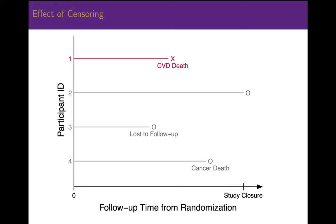Participant 3, for example, was lost to follow-up, so we know they lived at least that long without dying due to CVD, but we don't know how much longer they lived or what they eventually died of. If we count participant 3 as dying of CVD at the time they were lost to follow-up, our estimate of the survival time will almost certainly be too short, possibly by a lot. One very common correct way to deal with censored observations is to calculate survival using the Kaplan-Meier method. This method uses all of the data available at a given time, including participants who eventually will be censored, to estimate the survival at that time.